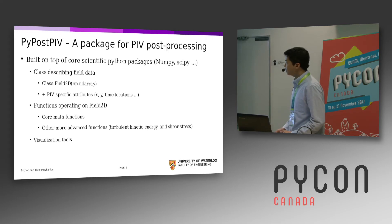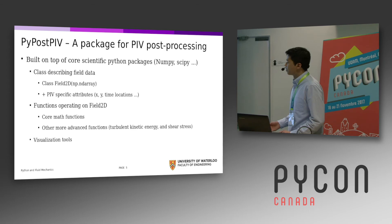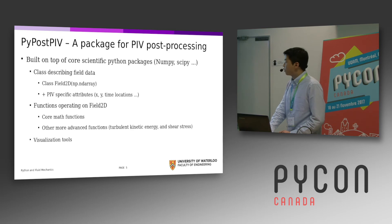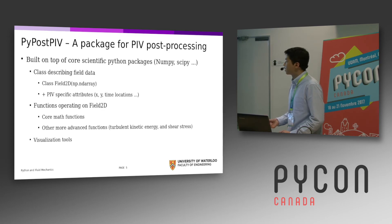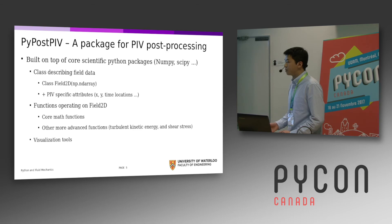The package is called pypostpiv. It really consists of three key things. First is a class which inherits from NumPy's ndarray, and in addition it adds those missing attributes like the grid spacing in space and the time locations at which those vector fields were captured.